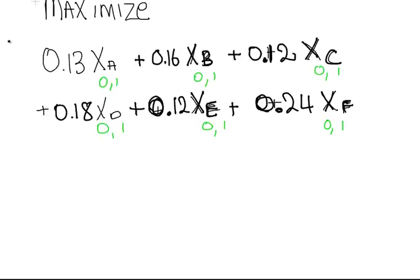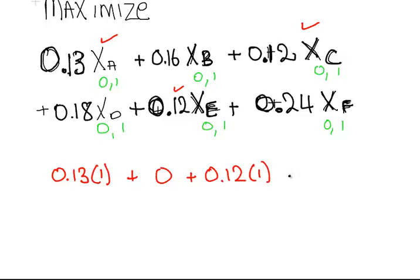Let's just say for argument's sake we go with projects a, c, and e. What would our profit be then? That would be 0.13 times 1, plus 0.16 times 0, plus 0.12 times 1, plus 0, plus 0.12 times 1, plus 0. Our profit in that case would be 0.37.